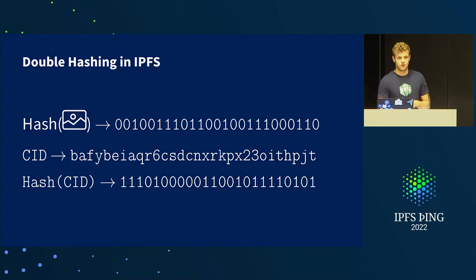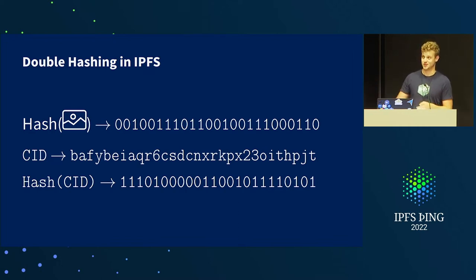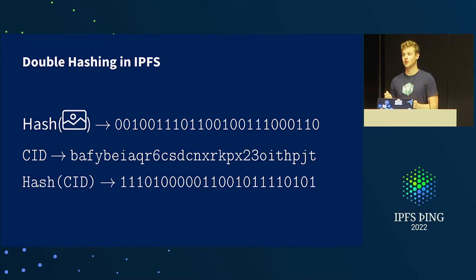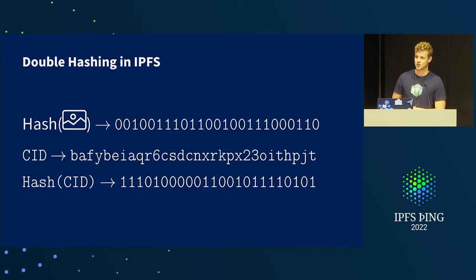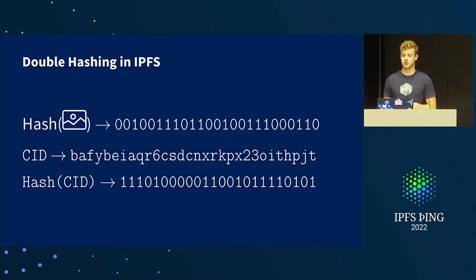What do I mean by double hashing? In IPFS, we have content, and to get the CID, we take the content, compute some hash, and then build the CID using normal CID construction. The location of the provider record pointing to the content in the DHT will be at the address which is the hash of the CID — making it effectively the double hash of the content itself.